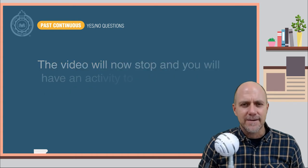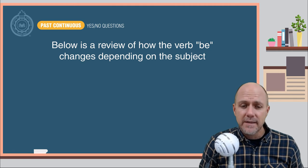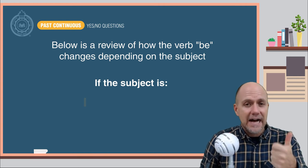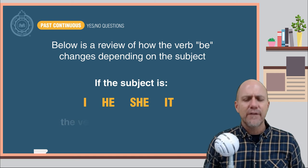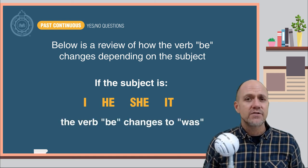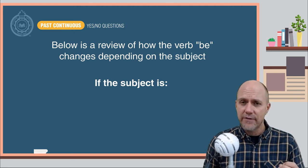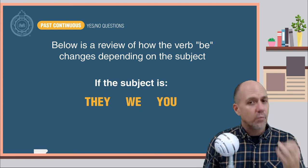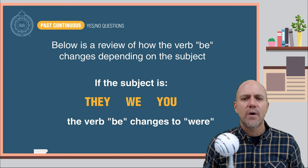Okay. Below is a review of how the verb be changes depending on the subject. If the subject is I, he, she, or it, the verb be changes to was. If the subject is they, we, or you, the verb be changes to were.